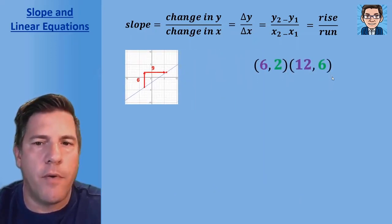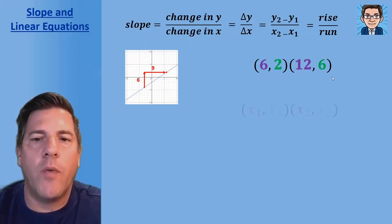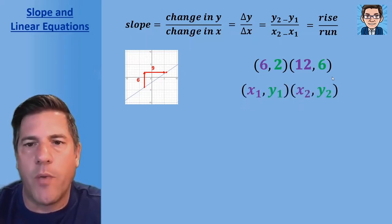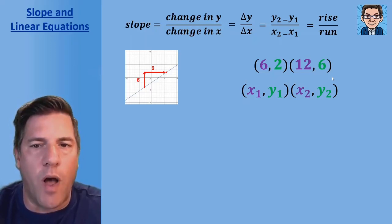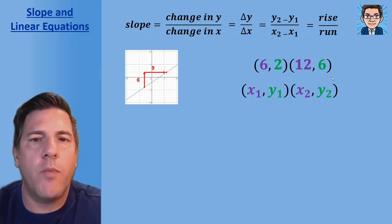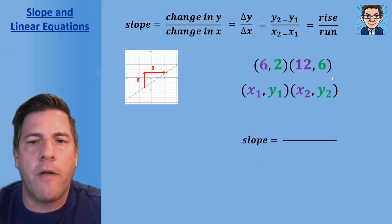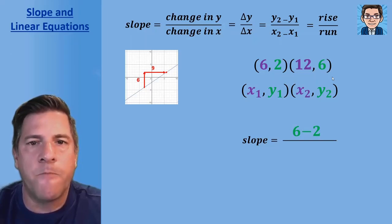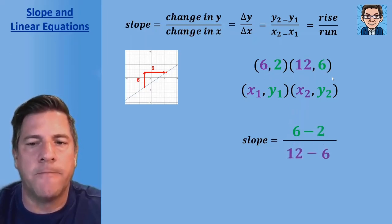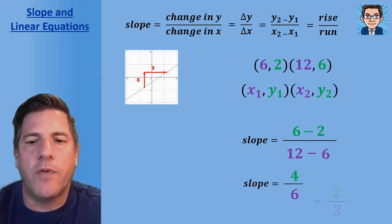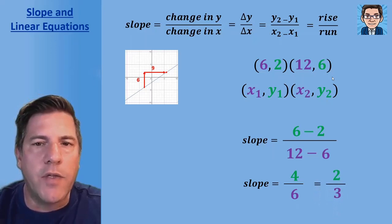When we have two points, we label the first one x1 and y1, and the second point x2 and y2. To find the slope of the line through those two points, the numerator is the difference in the y's and the denominator is the difference in the x's. We subtract those out and get four over six, and again reduce the fraction whenever we can to get two over three.